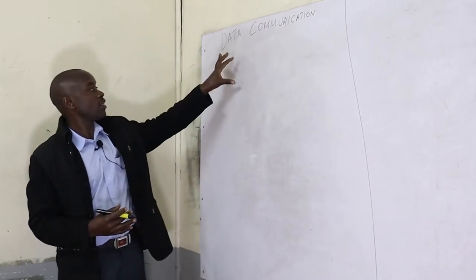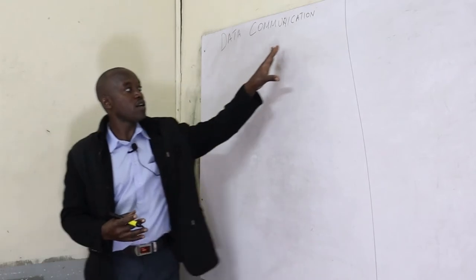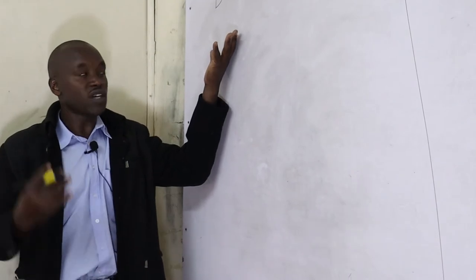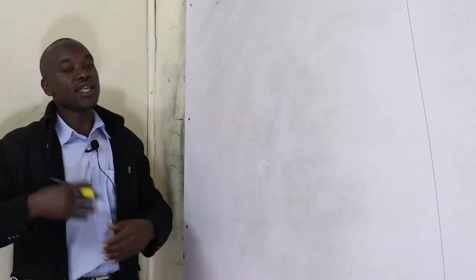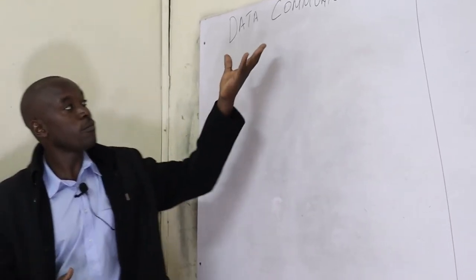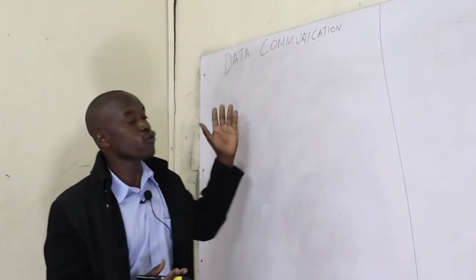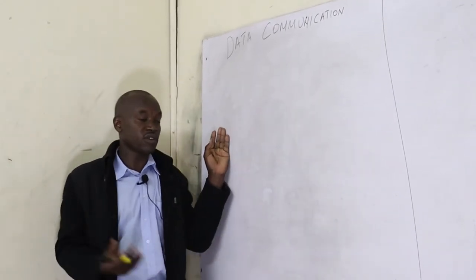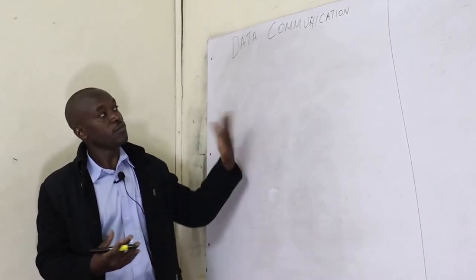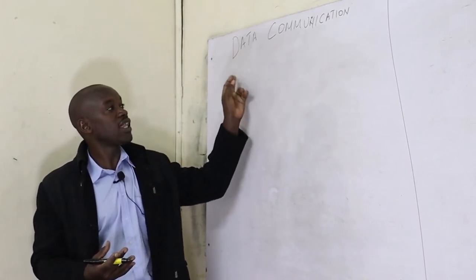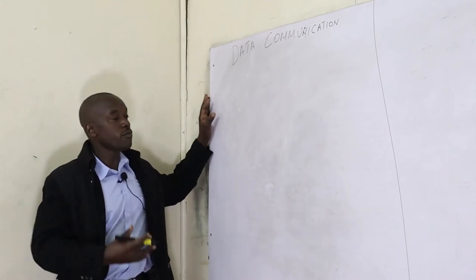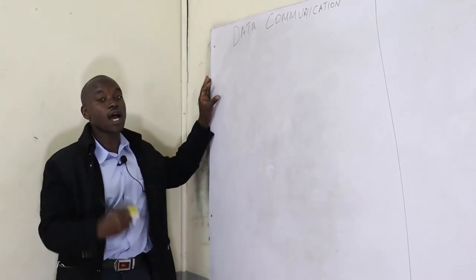Data communication is made up of two words. Data refers to raw facts which are supposed to be either encoded or put in a format which the receiver can understand. Communication is the process of transferring information from the source up to the destination — sometimes we call the source the sender or transmitter, and the receiver the recipient. The entire process of transferring data from source to destination is what we refer to as data communication.